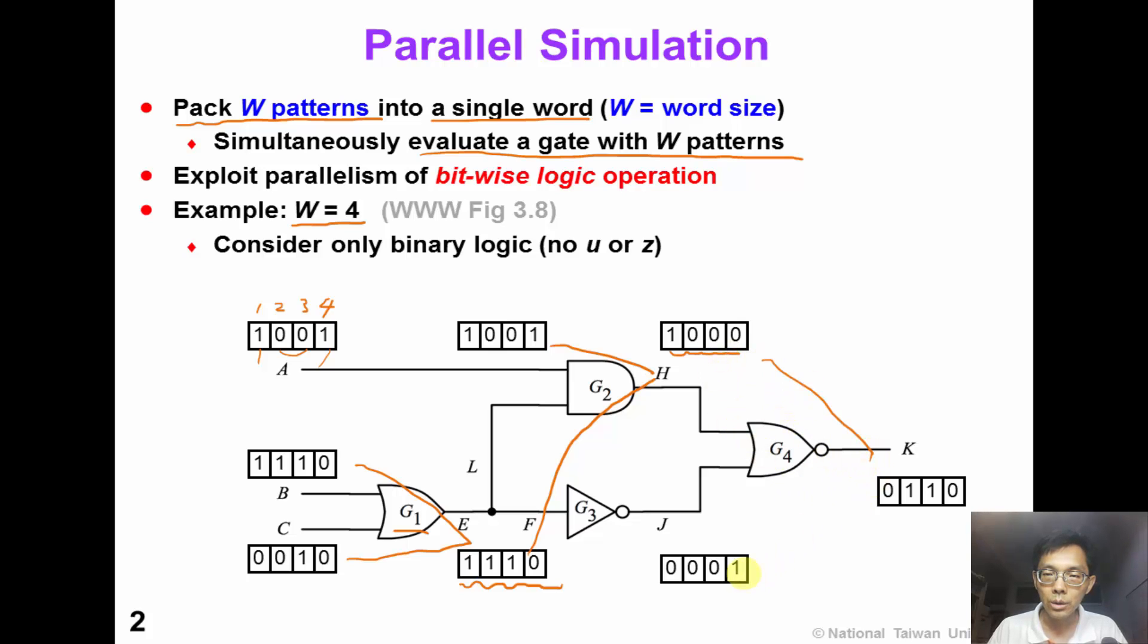In this way, we can obtain the output of the circuit parallel simulation, which is 0, 0, 0, 1, 0. Please note that in this parallel simulation, we consider only binary logic. That means we ignore unknowns or high impedance.